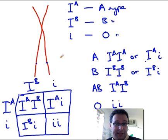And that's what we call multiple alleles. It's what happens when you have more than just two alleles for a given gene locus.